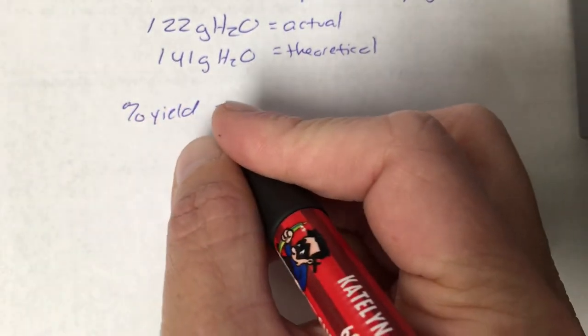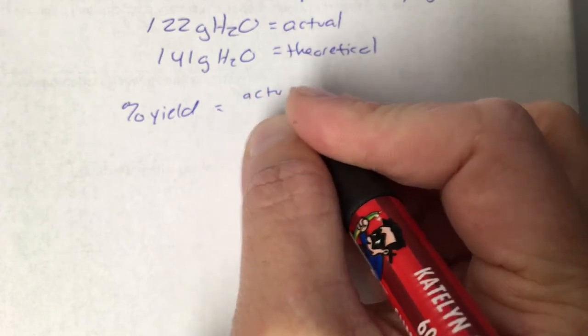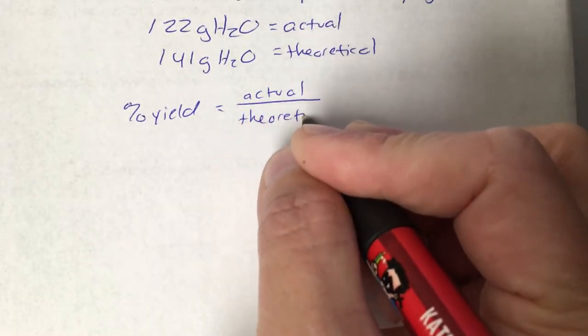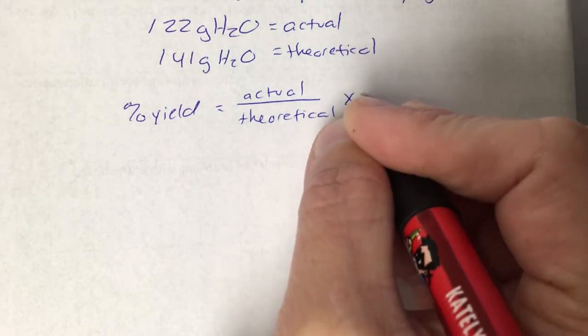And it's called percent yield. It is actual divided by theoretical times 100.